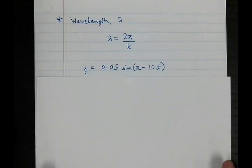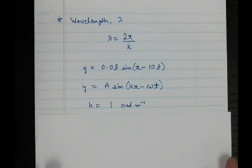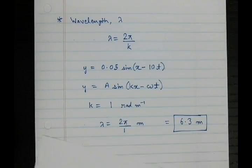Let's look at our equation and compare it to the general equation for a wave. And you see that k for our case is equal to 1. So k is equal to 1. The units of wave number are radian per meter. And we plug the value back into λ and we find that λ is equal to 2π by 1, which is equal to 6.3 meters.